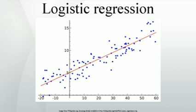Model fitting. Estimation — Maximum likelihood estimation. The regression coefficients are usually estimated using maximum likelihood estimation. Unlike linear regression with normally distributed residuals, it is not possible to find a closed-form expression for the coefficient values that maximizes the likelihood function, so an iterative process must be used instead, e.g. Newton's method. This process begins with a tentative solution, revises it slightly to see if it can be improved, and repeats this revision until improvement is minute, at which point the process is said to have converged. In some instances the model may not reach convergence. When a model does not converge, this indicates that the coefficients are not meaningful because the iterative process was unable to find appropriate solutions. A failure to converge may occur for a number of reasons: having a large proportion of predictors to cases, multicollinearity, sparseness, or complete separation.